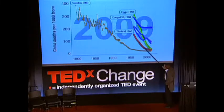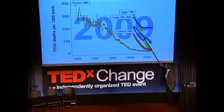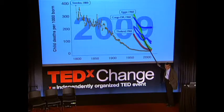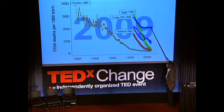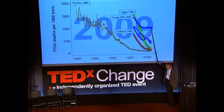Millennium Development Goal rates for child mortality are fully possible. The good thing is that Ghana today is going with the same rate as Egypt did at its fastest. Kenya is now speeding up. But we have a severe problem in countries that are at a standstill.